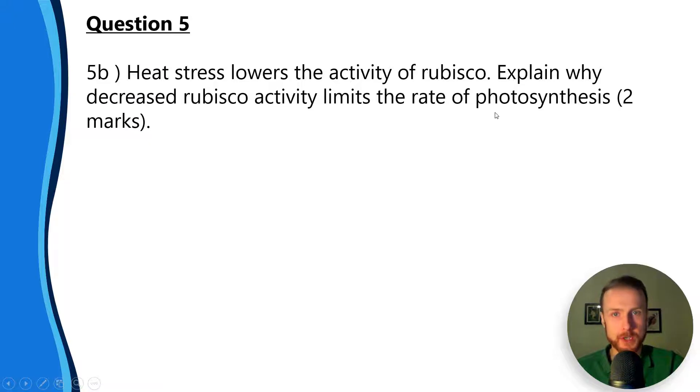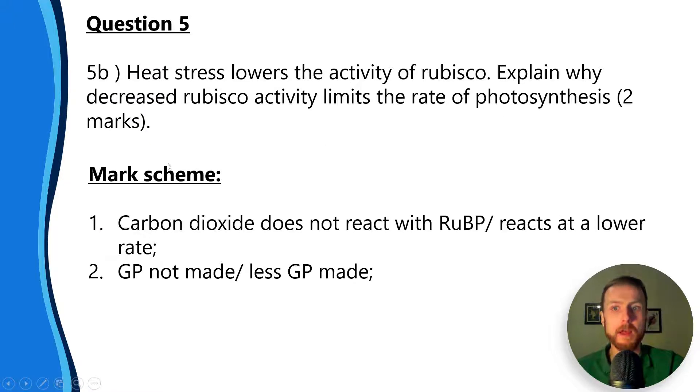Question 5b: heat stress lowers the activity of rubisco - remember that's the enzyme. Explain why decreased rubisco activity limits the rate of photosynthesis. One mark for saying carbon dioxide does not react with RuBP because the enzyme's rate is lowered, or that it reacts at a lower rate. If there's a forward slash in a mark scheme, either/or is accepted. Where there's a semicolon, that's an end of a mark point. Number two: GP is not made or less GP is made.